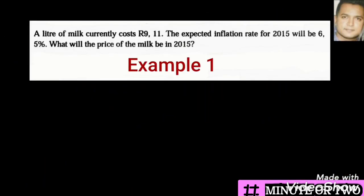These questions are taken from the 2020 Department of Education booklet. In this first example, a litre of milk currently costs R9.11. The expected inflation rate for 2015 will be 6.5%. What will the price of the milk be in 2015? All we have to do is find the percentage of R9.11 using the 6.5%, and then add it on to the R9.11.